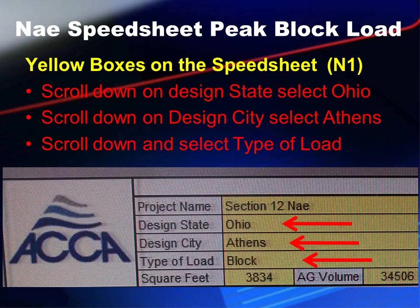We scroll down and pick the design state — Ohio — then a list of cities appears and we pick Athens. Then we scroll down and pick the type of load: block, room, or zone. We pick block load because we're figuring out the whole building to know what size equipment to install and estimate ductwork CFMs for a reasonable bid. If we're doing individual rooms or zones, we'd select room or zone and end up with several pages, one for each room.